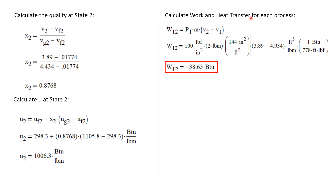Now let's calculate the work and heat transfer for each process. The first process is constant pressure, so the work is pressure times the change in volume. The change in volume is mass times the change in specific volume. Work for process one to two equals P_1 times mass times (v_2 minus v_1). With pressure in pounds force per square inch converted to square feet, the energy unit becomes foot-pounds force, and dividing by 778 foot-pounds force per BTU gives W_12 equal to negative 38.65 BTUs.